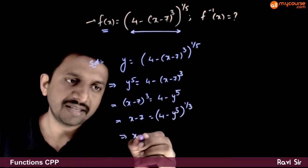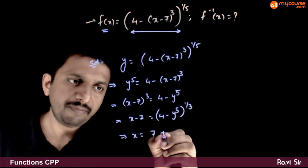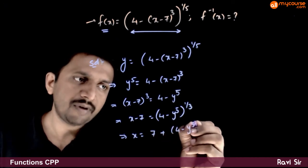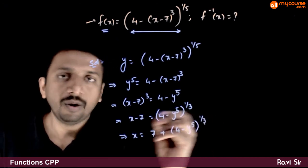This implies x minus 7 is equal to 4 minus y to the power 5 whole power 1 by 3. And finally, x is equal to 7 plus 4 minus y power 5 whole power 1 by 3.